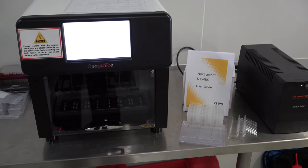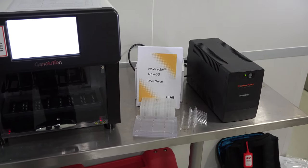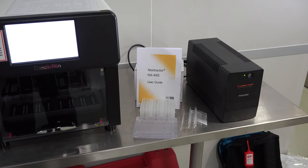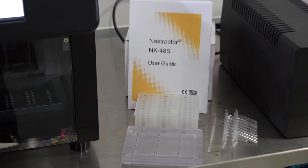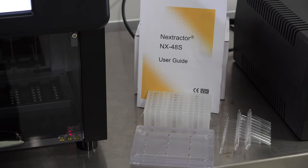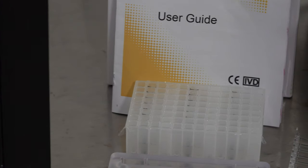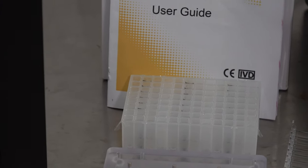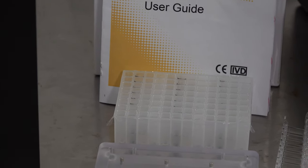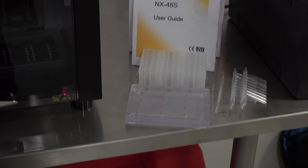We are now going to install the Nextractor NX48S from Genolution. This instrument provides cartridge-based extraction, and the entire procedure is carried out within the safety of the extraction unit. The cartridge consists of 3 wells multiplied by 8, so we have 24 wells in which you can extract the sample. You can install 2 of these cartridges in the unit at any given time.